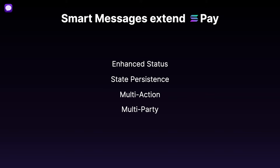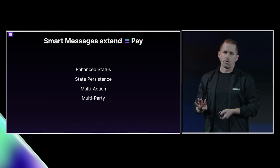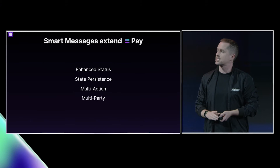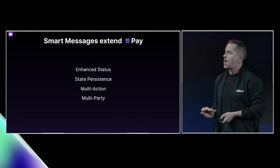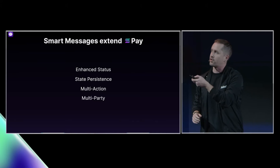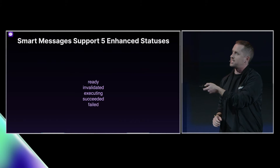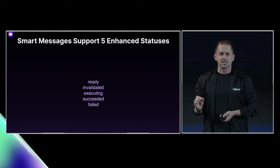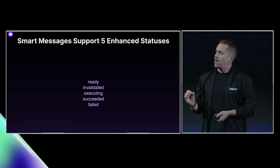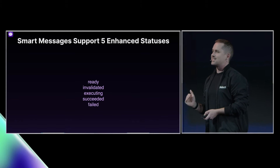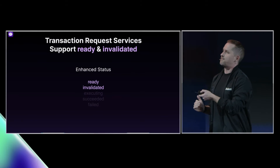Smart messages extend Solana Pay in at least four ways — we're starting with four: enhanced status, state persistence, multi-action support, and multi-party support. We're going to cover the first two in more detail now. There are five enhanced statuses: ready, invalidated, executing, succeeded, and failed.